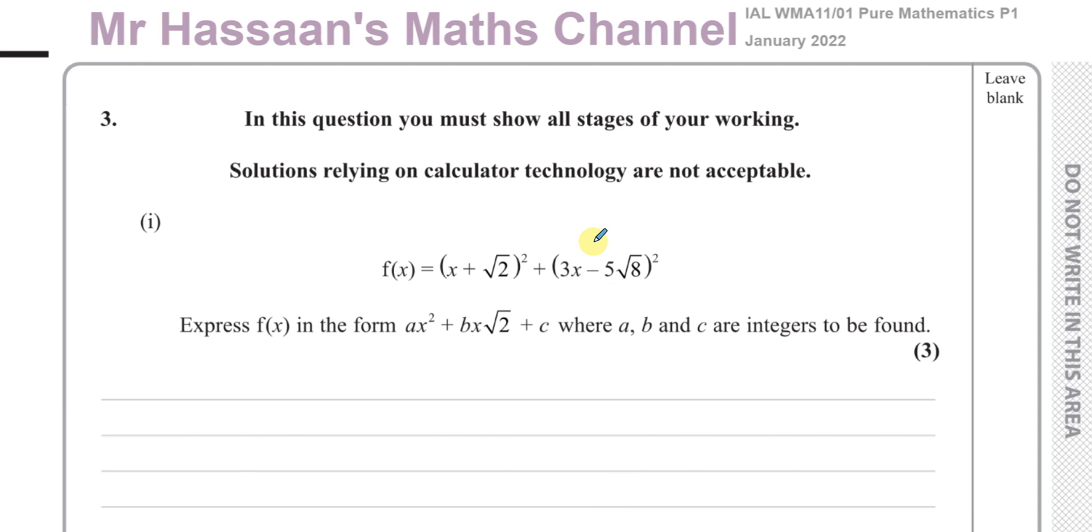Okay, welcome back. This is Mr. Hassan's Math Channel and I'm now answering question number 3 from the January 2022 International A-Level Edexcel Pure Mathematics P1 exam paper. This question is about surds and manipulation of surds. It says f(x) equals (x + √2)² plus (3x - 5√8)² Express f(x) in the form ax² + bx√2 + c, where a, b, and c are integers to be found.